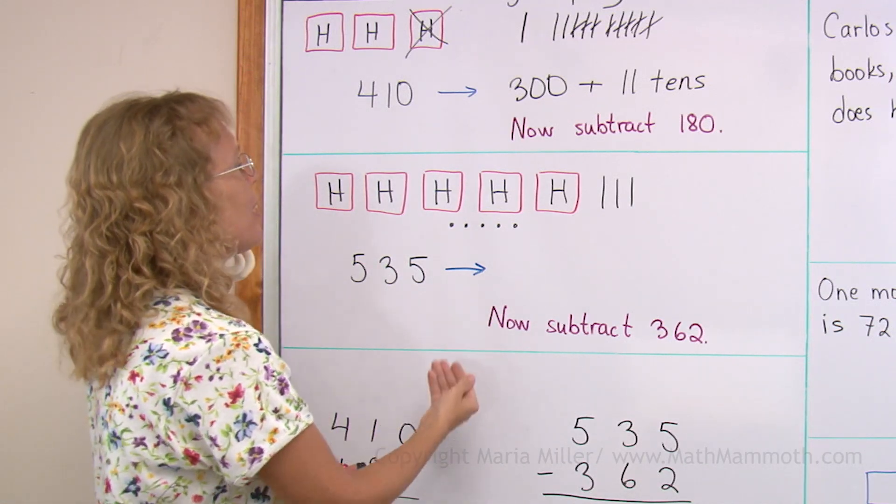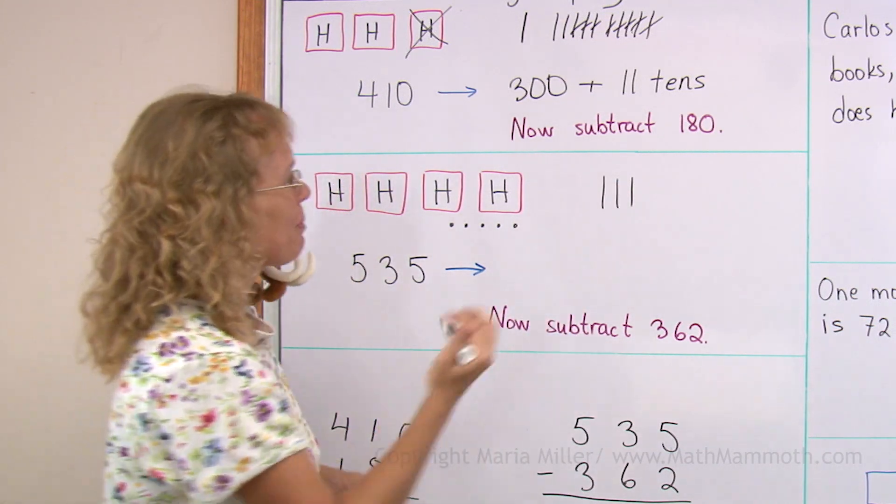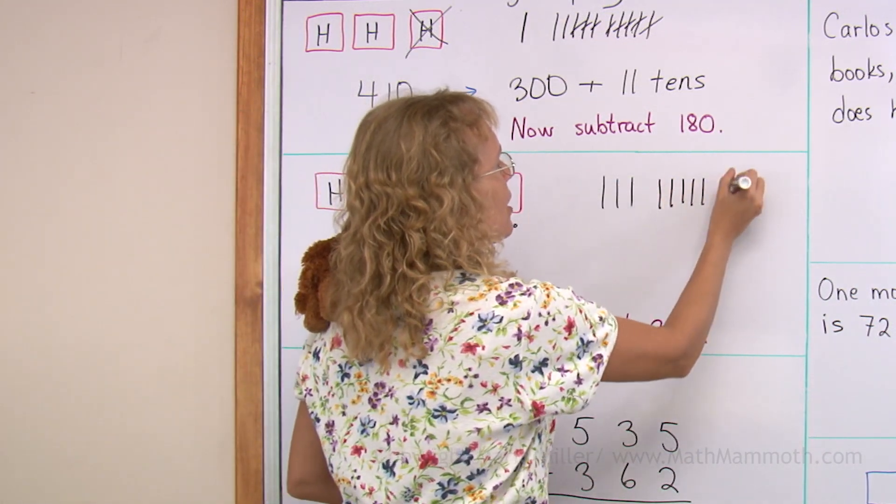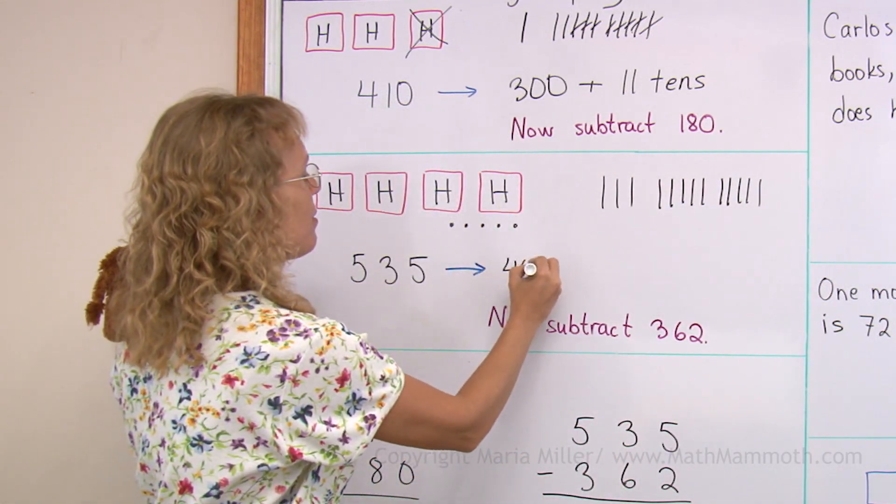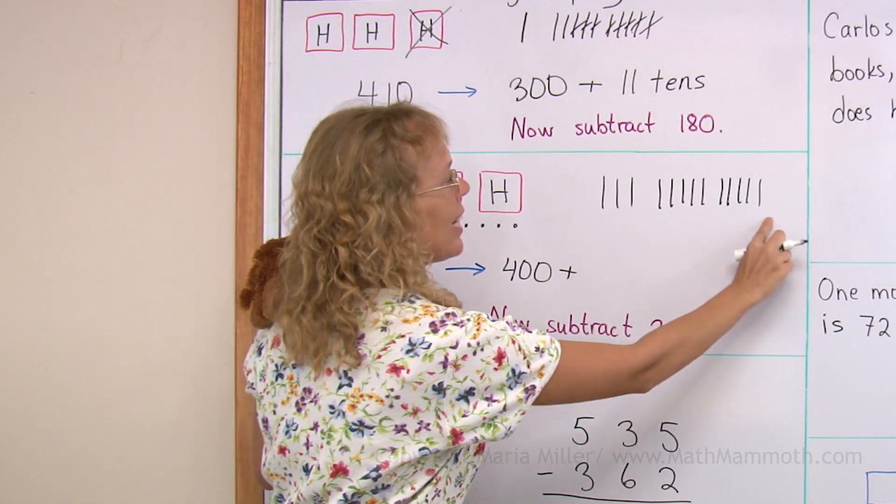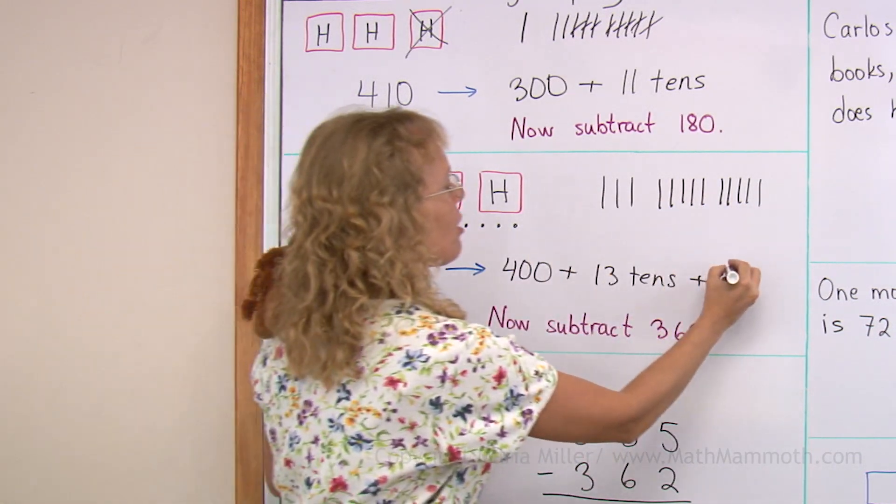So in the regrouping I take one of the hundreds and replace it with ten tens. One, two, three, four, five, six, seven, eight. There. And so now I have four hundred and there's three and ten or thirteen tens. And these didn't change, so there's still five.